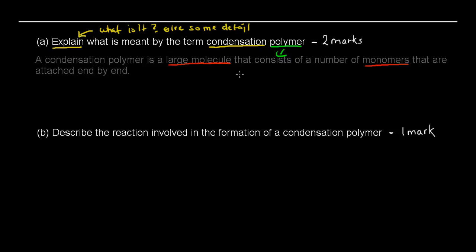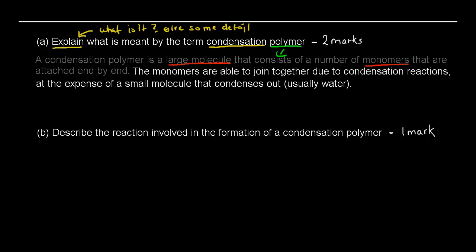In this case, I just described and explained the first part: what is a polymer? A condensation polymer is a large molecule that consists of a number of monomers that are attached end by end. And then, the second part is I explained what a condensation polymer was. The monomers are able to join together due to condensation reactions, at the expense of a small molecule that condenses out, usually water.